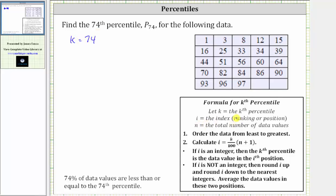i equals the index, which is also referred to as the ranking or position of a given data value, and n is equal to the total number of data values. Because we have 23 data values, n equals 23.